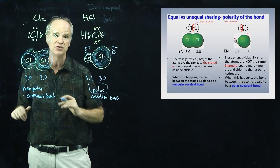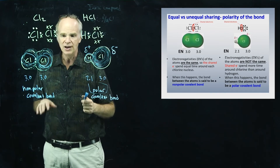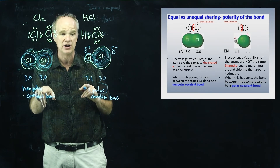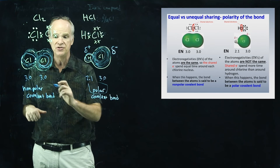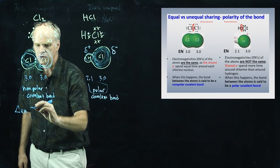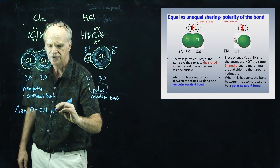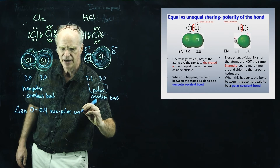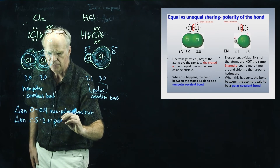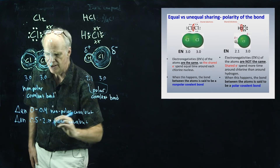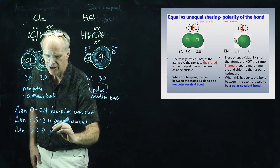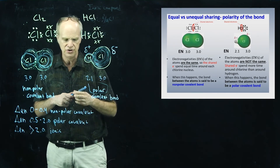You will need to arithmetically judge whether the bond between atoms is nonpolar covalent or polar covalent. The way you do that is by looking at the difference in electronegativity between the atoms. A difference between 0 and 0.4 is considered a nonpolar covalent bond. A difference from 0.5 to 2.0 is a polar covalent bond. And if the electronegativity difference is greater than 2.0, that is actually going to be an ionic bond.